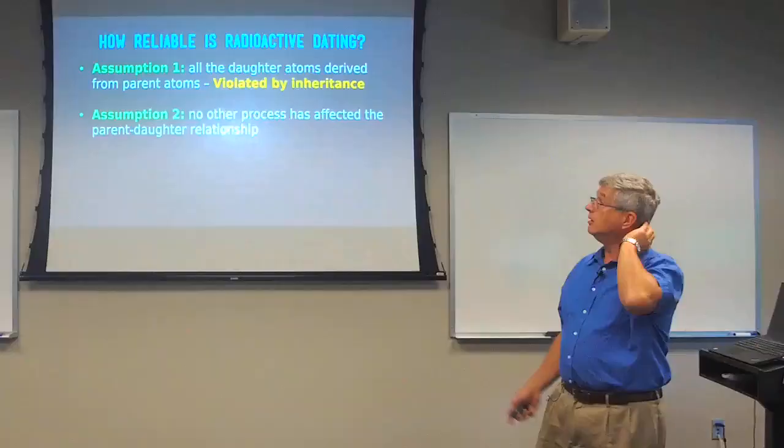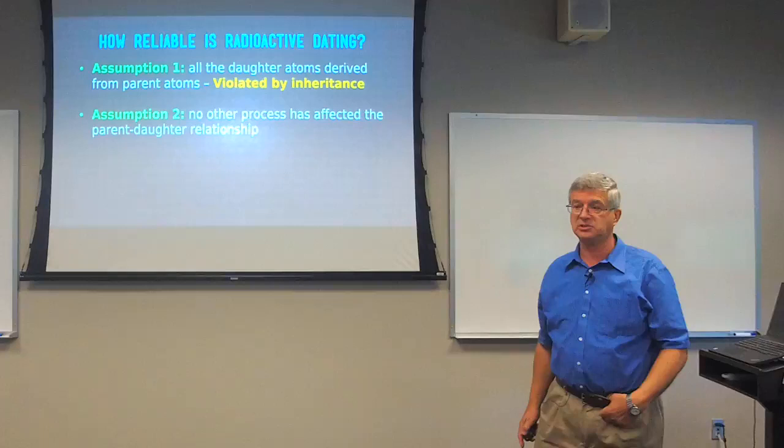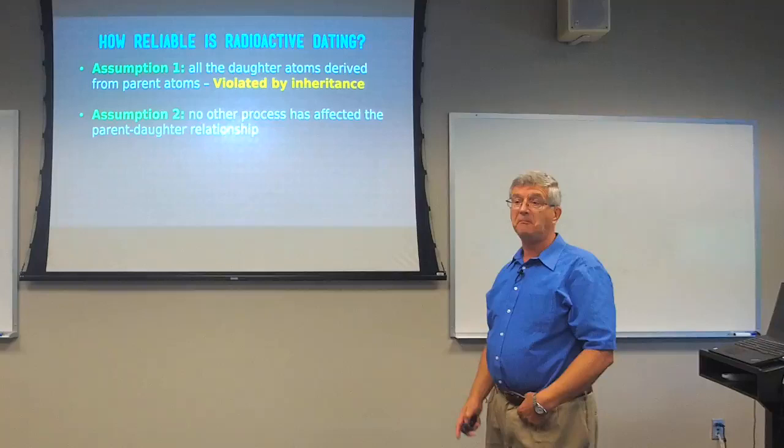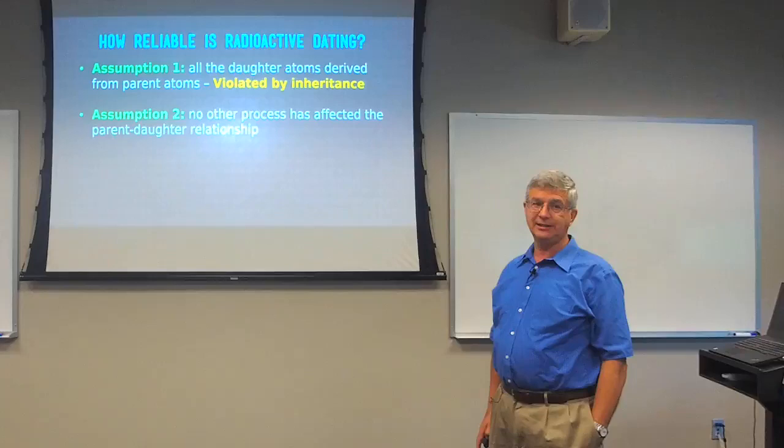We've seen that assumption number one — no inheritance — has been violated, because inheritance is a major factor in many examples. Just because we don't detect inheritance doesn't mean it isn't there. Whenever we can observe and know the true age of the rock, the method fails — 100% of the time. So why should we assume it works when we don't have observational evidence of the true age?